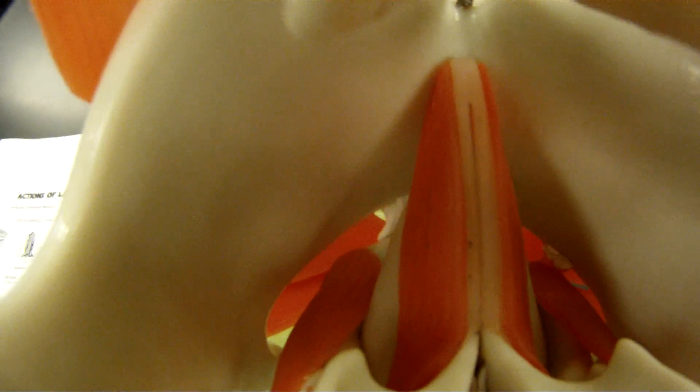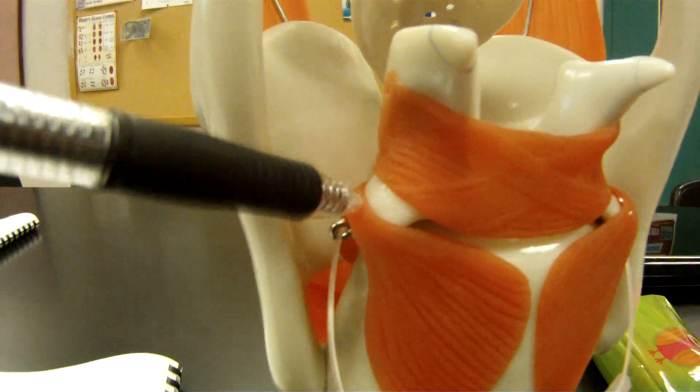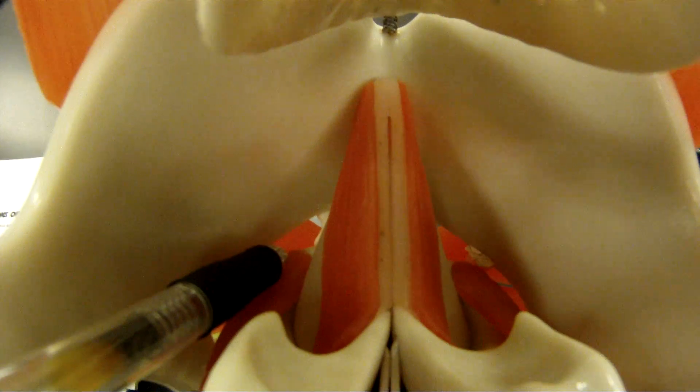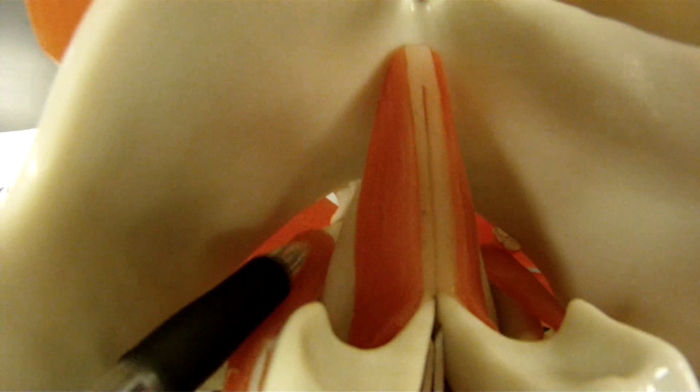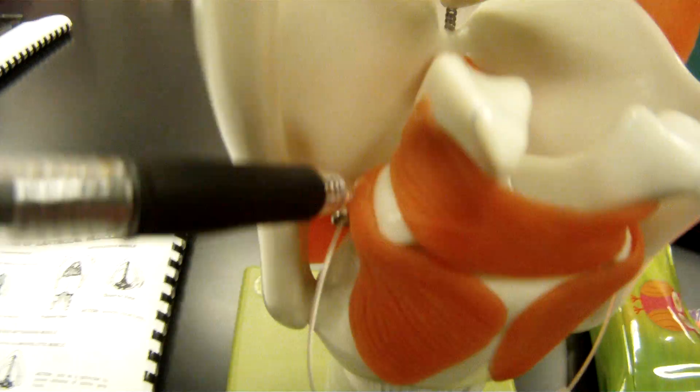But it's actually going from the cricoid cartilage back here to the aretinoid cartilage. So it's going to attach here in the front, cricoaretinoideus, starting from the cricoid, coming back to the aretinoid cartilage.